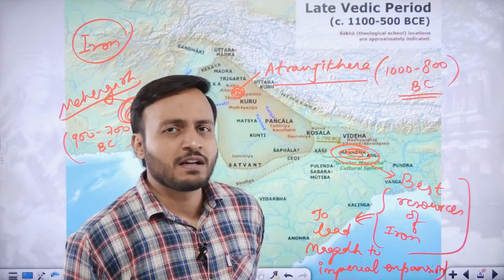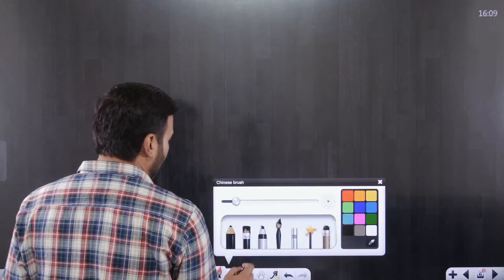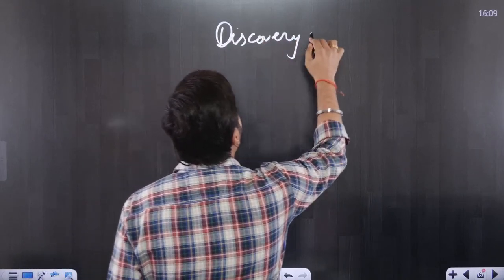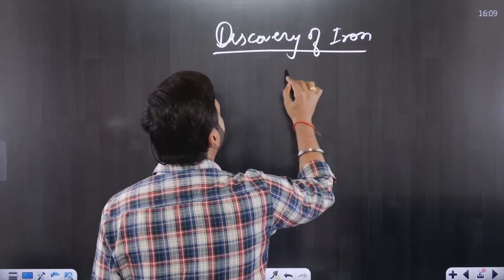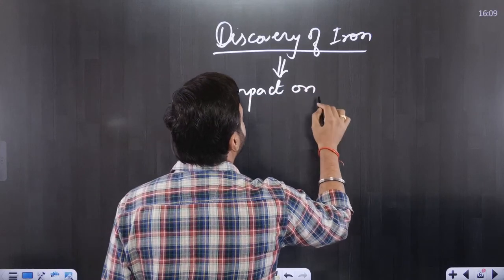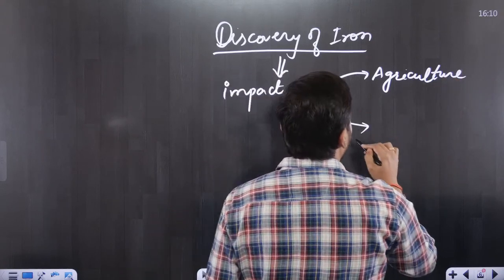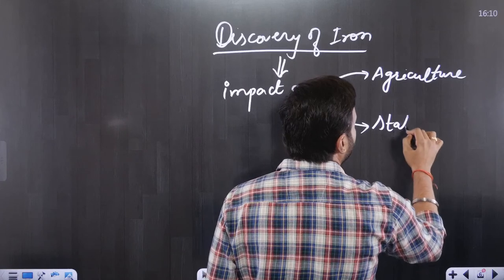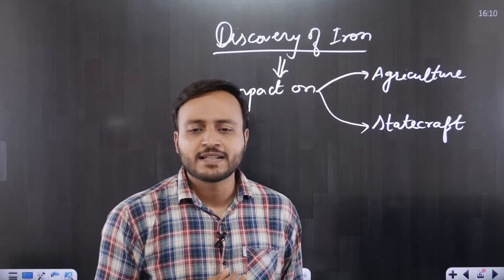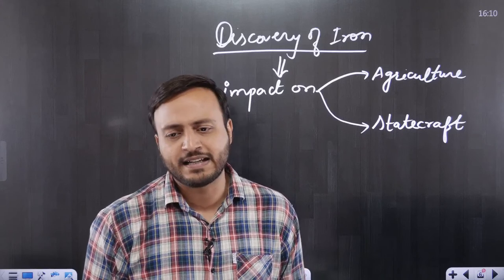Once you have discovered iron, try to understand that the discovery of iron led to impact on agriculture and also led to impact upon the statecraft. The question comes into our minds: what type of impact was there on agricultural practices and what type of impacts were there on the statecraft?